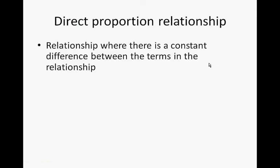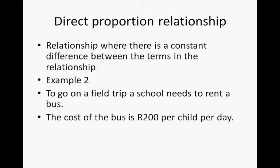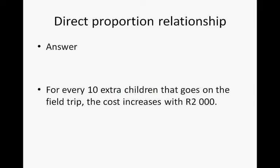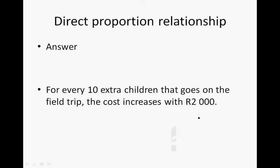Direct proportion relationship. This is a relationship where there is a constant difference between the terms in the relationship. To go on a field trip, a school needs to rent a bus. The cost of the bus is R200 per child. Calculate how much you will pay if different amounts of children go on the field trip. For every 10 extra children that go on the field trip, the cost increases by R2,000.